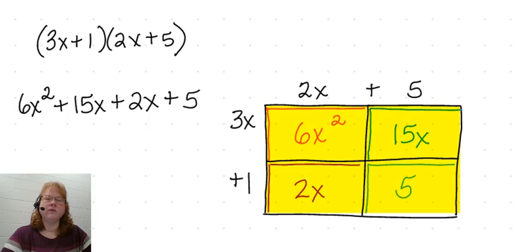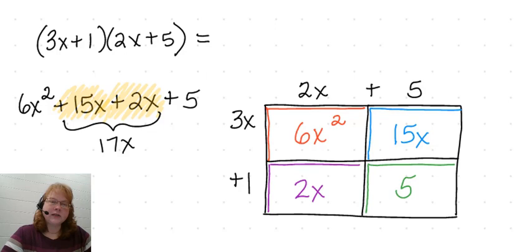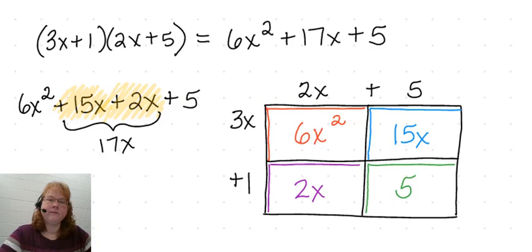When we add them all together, we have the area of the entire rectangle. Notice that two of these terms are like terms — we have a 15x and a 2x. We can simplify this further by adding those two terms together: 15x and 2x gives us 17x. So our final answer is 3x plus 1 times 2x plus 5 equals 6x squared plus 17x plus 5. And that's how you multiply two linear expressions.